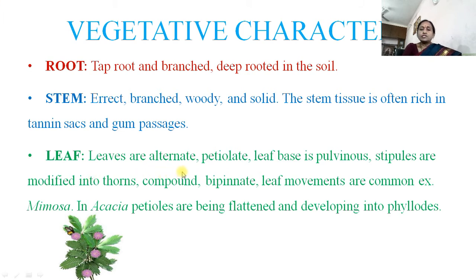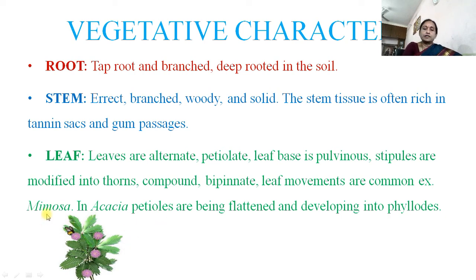Leaves are alternate, petiolate, and leaf base is pulvinous. Stipules are modified into thorns. Compound leaf is present — bipinnate. Leaf movements are common — that is seismonastic movements shown by genus Mimosa pudica, also called Touch-me-not. When we touch the leaf it shrinks down. In Acacia, petioles are flattened and developed into phyllodes.